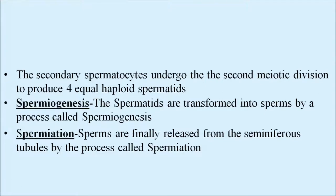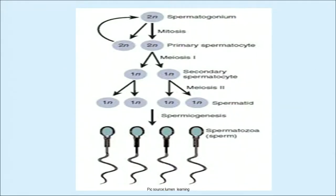A primary spermatocyte completes the first meiotic division leading to formation of two equal haploid cells called secondary spermatocytes, which have 23 chromosomes each. The secondary spermatocytes undergo the second meiotic division to produce four equal spermatids. Then, through spermiogenesis, spermatids are transformed into sperms. Sperms are finally released from the seminiferous tubules by the process called spermiation. The process starts with diploid spermatogonium, which by meiosis I produces haploid spermatids, then spermiogenesis converts them into sperms.